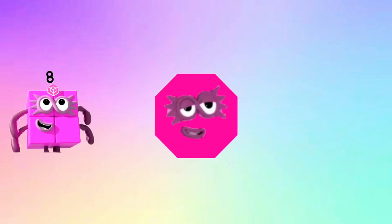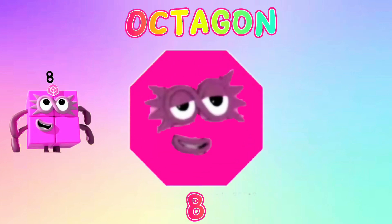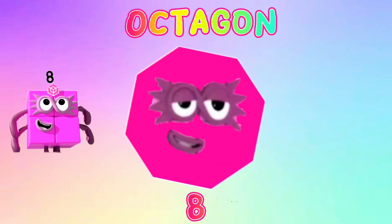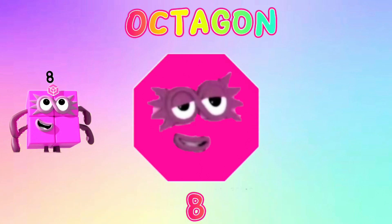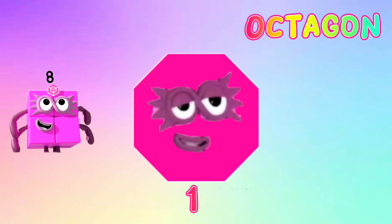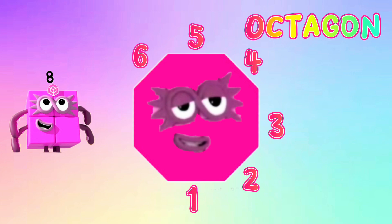8. It's an octagon — a polygon which has eight sides and eight angles. 1, 2, 3, 4, 5, 6, 7, 8.